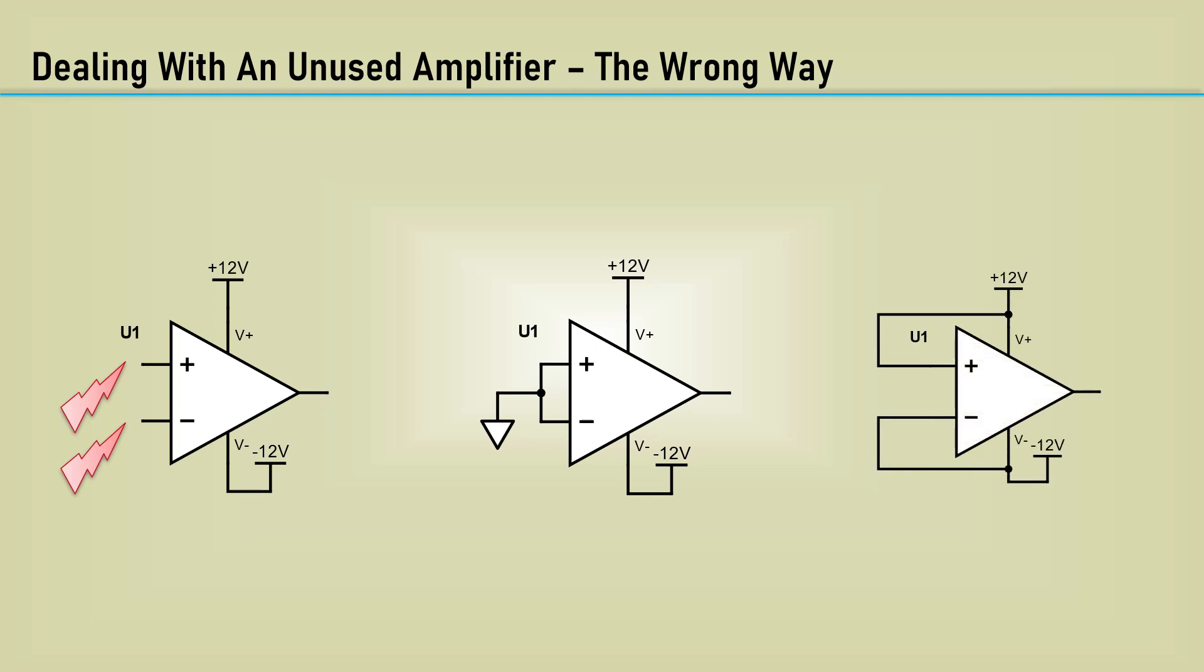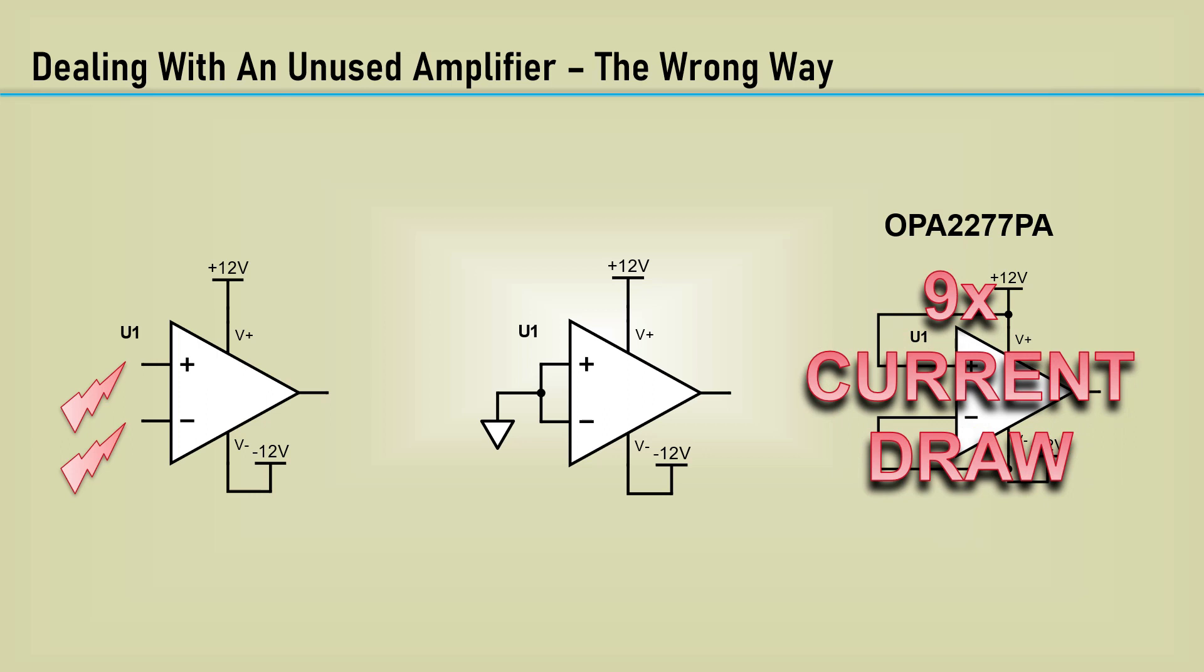I've seen where unused op-amps were connected this way, with the non-inverting input tied to the positive rail, and the inverting input tied to the negative rail. This guarantees the output will be slammed to the positive rail. I tested this on the bench with an OPA2277, and it drew over nine times more current than the other configurations.